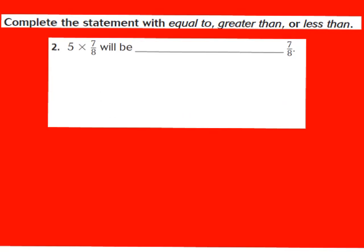Now let's take a look at question number 2. The directions say complete the statement with equal to, greater than, or less than. The problem is the whole number 5 times the fraction 7/8 — we have to decide whether it's equal to, greater than, or less than 7/8. When a fraction is multiplied by a number greater than 1, and in this problem that number is 5, the product will always be greater than the fraction.